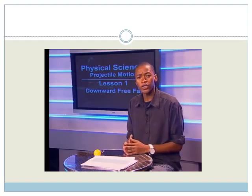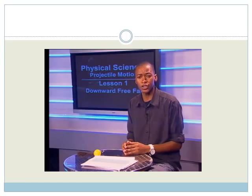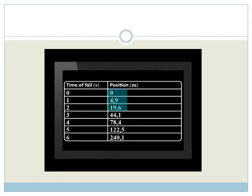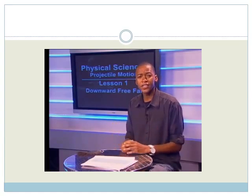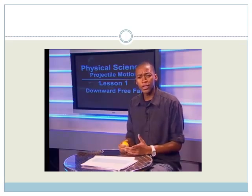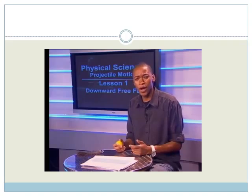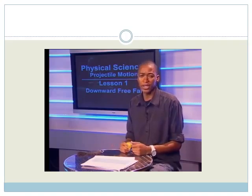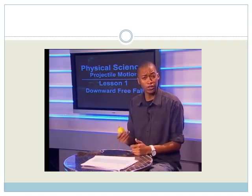So far we've looked at how velocity changes during freefall. Now let's look at how a projectile's position changes during freefall. The ball in freefall covers longer and longer displacements during each second it falls — that isn't surprising because the ball is getting faster and faster, as it is both accelerating downward and moving downward.